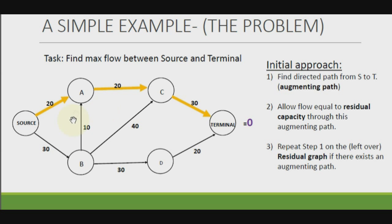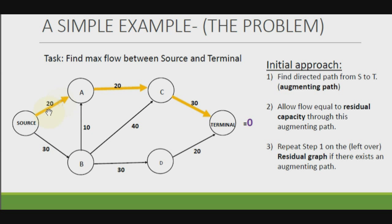This is a path I've chosen — a direct path from source to terminal, which is called an augmenting path. We allow flow equal to the residual capacity through this augmenting path. The residual capacity is the maximum amount of flow we can push through; in this case, the maximum is 20.